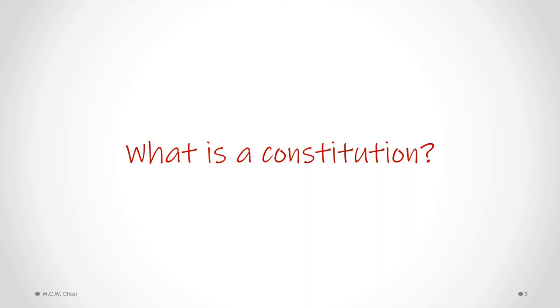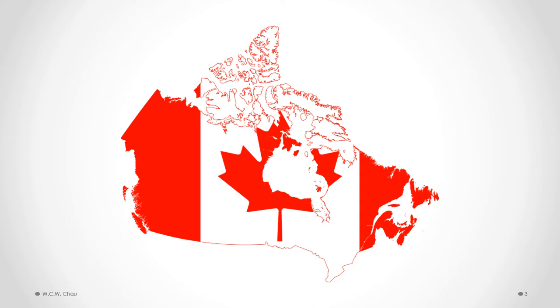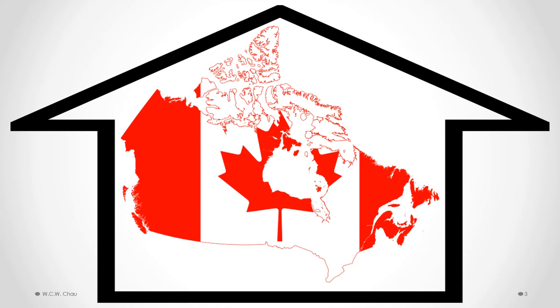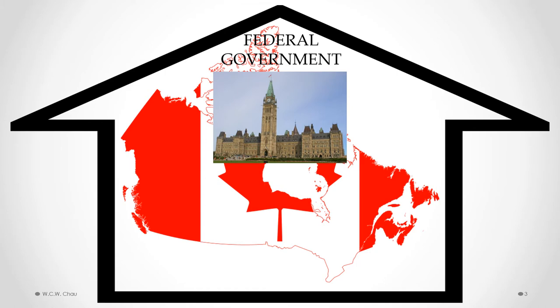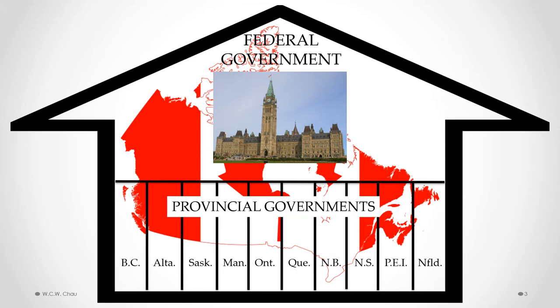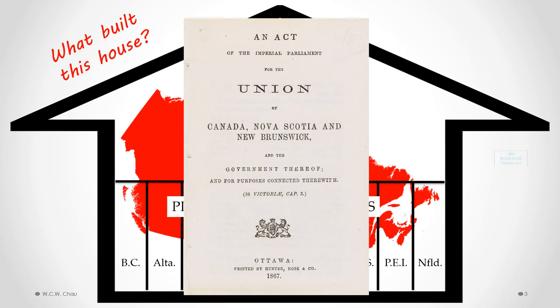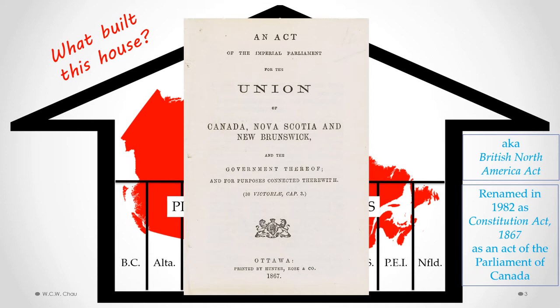Let's explain what a constitution is — in other words, how does the constitution create our current system of government in Canada. Imagine our country as one big house. Within this house are our various governments: we have the federal government, or federal parliament, located in Ottawa, which enacts laws applicable throughout Canada, and we also have our provincial governments in the form of provincial legislatures in each of the 10 provinces. What built this house? We look to the BNA Act, now known as the Constitution Act 1867.